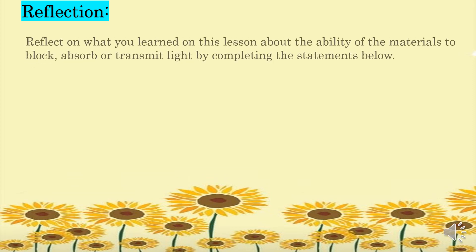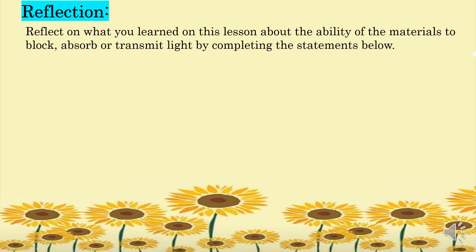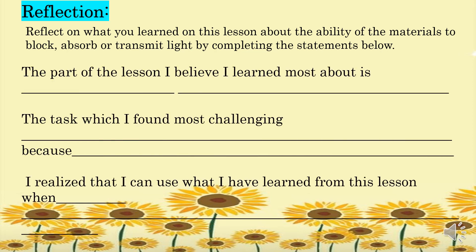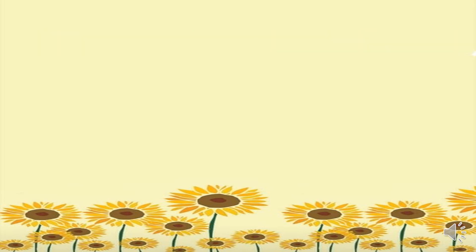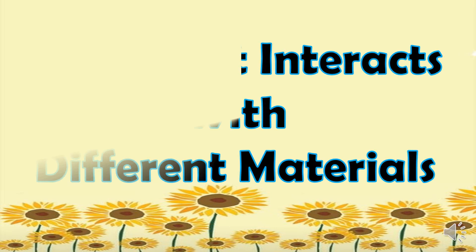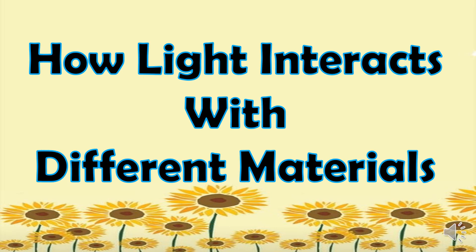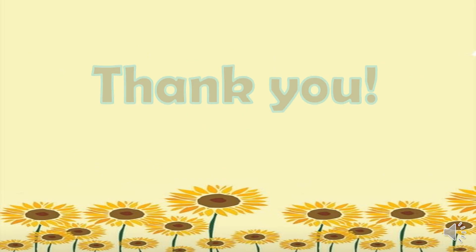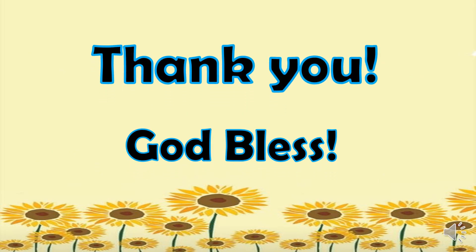For the reflection activity, reflect on what you learned about the ability of materials to block, absorb, or transmit light by completing the statements: the part of the lesson I believe I learned most about is blank; the task which I found most challenging is blank because blank; and I realized that I can use what I have learned from this lesson when blank. That concludes our lesson for today about how light interacts with different materials. I hope that you learned more about light. Thank you and God bless.